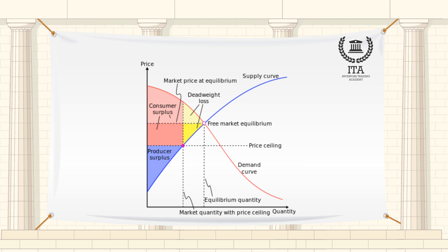In economics, the deadweight loss, also known as excess burden or allocative inefficiency, is a loss of economic efficiency that can occur when equilibrium for a good or service is not achieved, or it is not achievable.